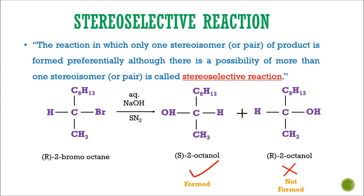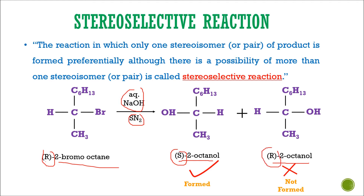Let us take the example of 2-bromooctane. Here, R-2-bromooctane in presence of aqueous NaOH undergoes an SN2 reaction mechanism and forms S-2-octanol and R-2-octanol. While the R isomer of 2-bromooctane forms only S-2-octanol and not R-octanol.